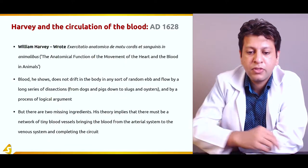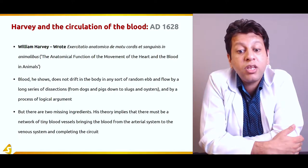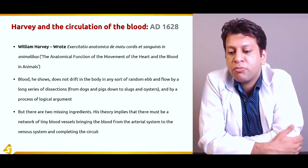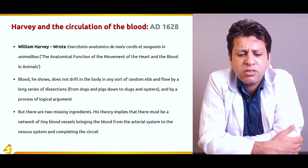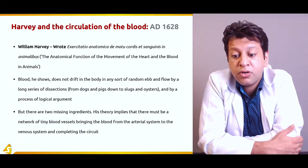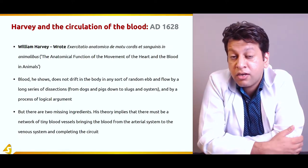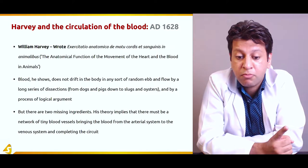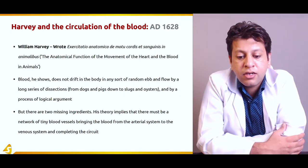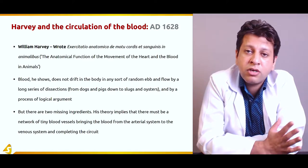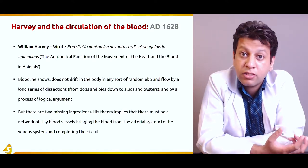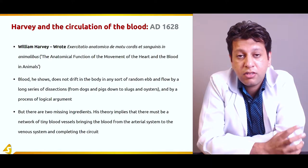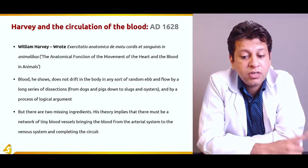William Harvey wrote a book — in English: The Anatomical Function of the Movement of the Heart and Blood in Animals. His main work was on circulation, and he showed that blood does not drift in the body in an ebb-and-flow motion as Galen described. Harvey said there is no ebb and flow; instead, something was missing — his theory implied there must be a network of tiny blood vessels bringing blood from the arterial system to the venous system, completing the circuit.